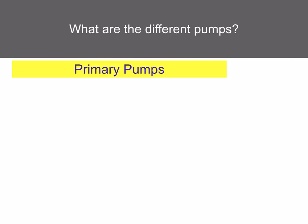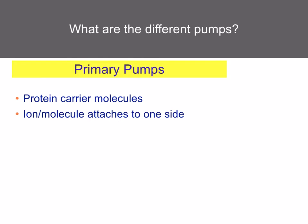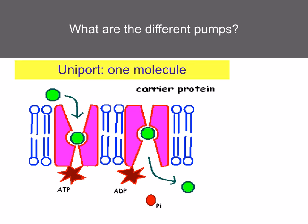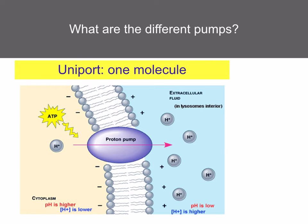Starting with primary pumps — these are protein carrier molecules. The ion or molecule attaches to one side, the carrier molecule reacts with ATP and changes shape, and then the ion or molecule is released on the other side. A uniport pump attaches to a specific molecule or ion on one side of the membrane. The carrier protein reacts with ATP and undergoes a change in shape, so the ion is transported to the other side against the diffusion gradient. It only involves one molecule or ion. An example is the proton pump.